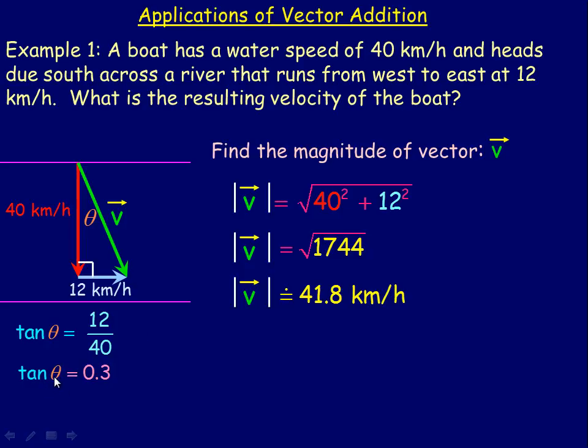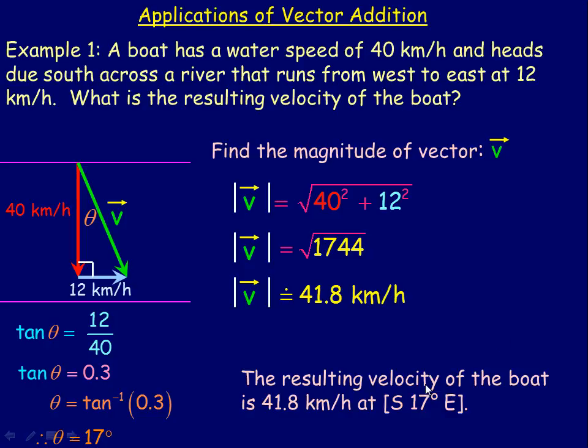To find the angle, we take the arctan or inverse tan of 0.3, which is about 17 degrees. So 17 degrees is how many degrees toward the east from straight south the boat is actually heading, the actual velocity of the boat. So we would answer the question by saying the resulting velocity of the boat is 41.8 kilometers per hour and a direction of south 17 degrees toward the east.